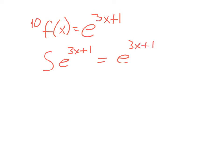We should check by taking the derivative. On the derivative of something like this, we need to do the chain rule. We would say that u is 3x plus 1, and then we would do the derivative of the big thing times the derivative of the little thing — the inner and the outer. So it would end up being e to the 3x plus 1 times the derivative of u, which would be 3.